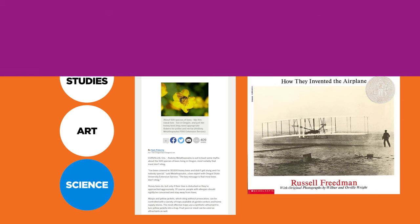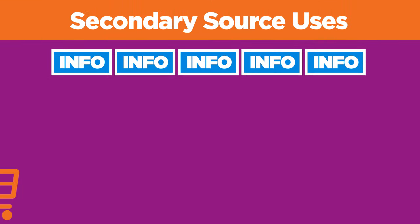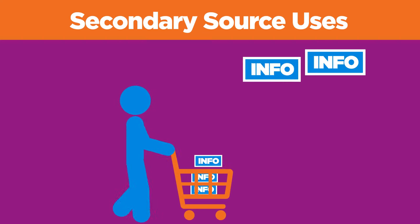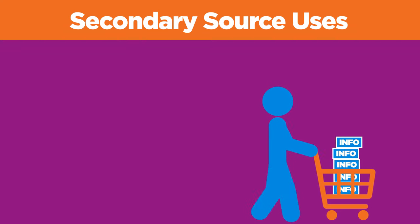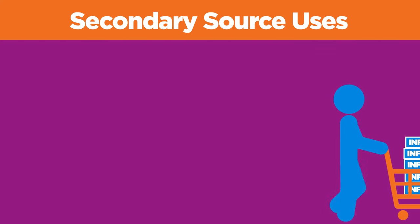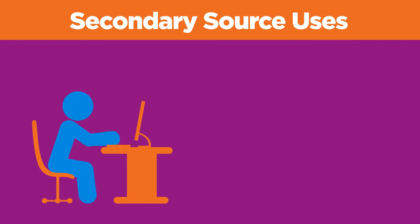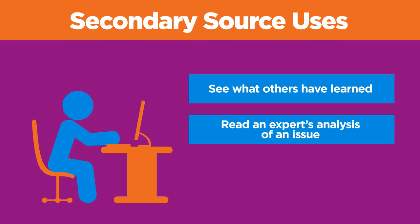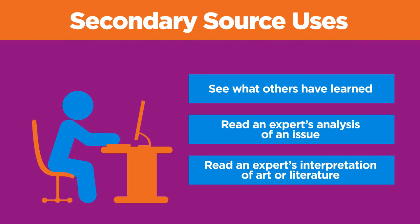So when should you use secondary sources? A common use is for gathering information about a subject, helping you build background knowledge. Use secondary sources when you want to see what others who have studied or investigated a topic or event have learned about it, or when you want to read an expert's analysis of an issue or interpretation of a work of art or literature.